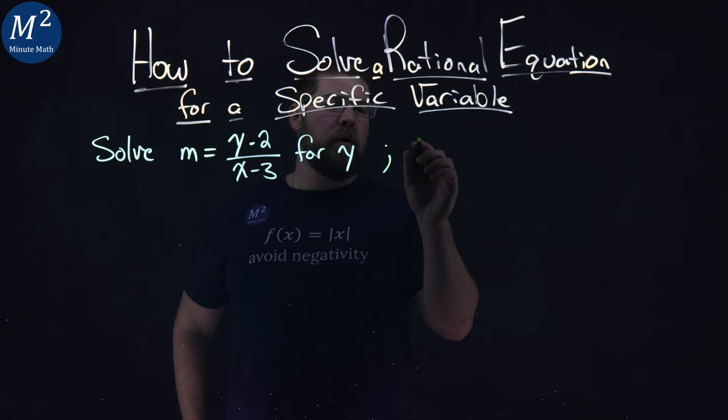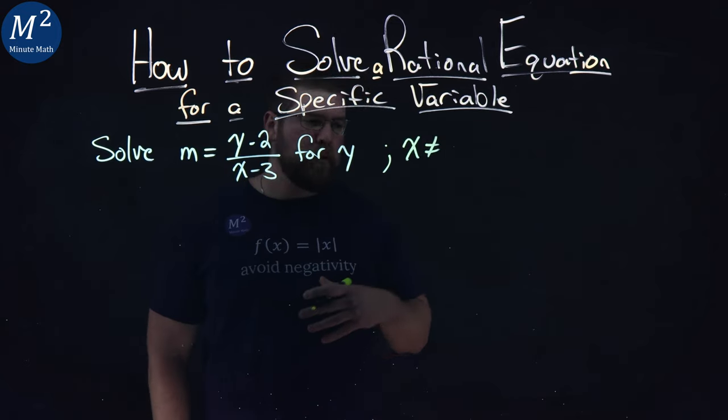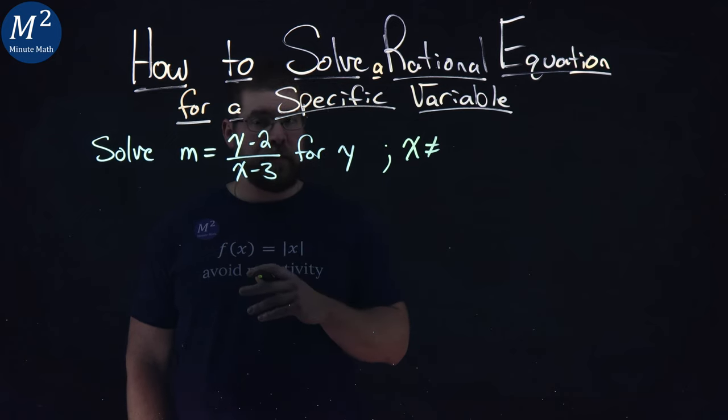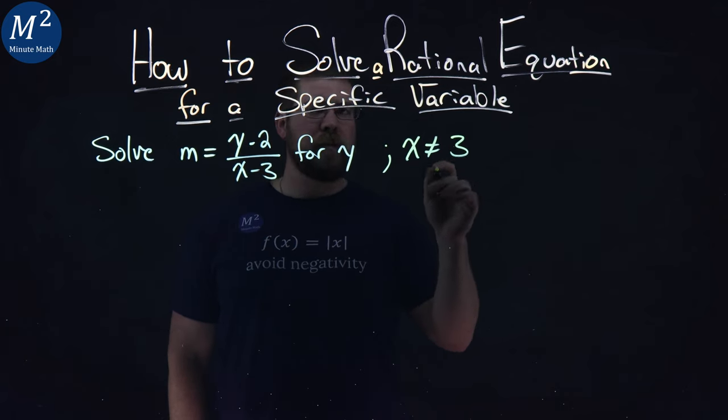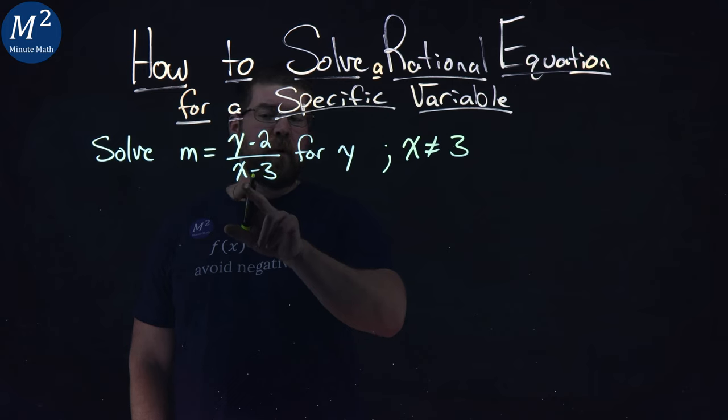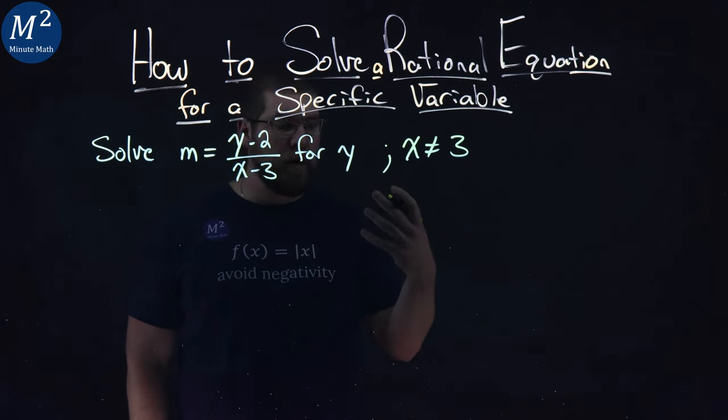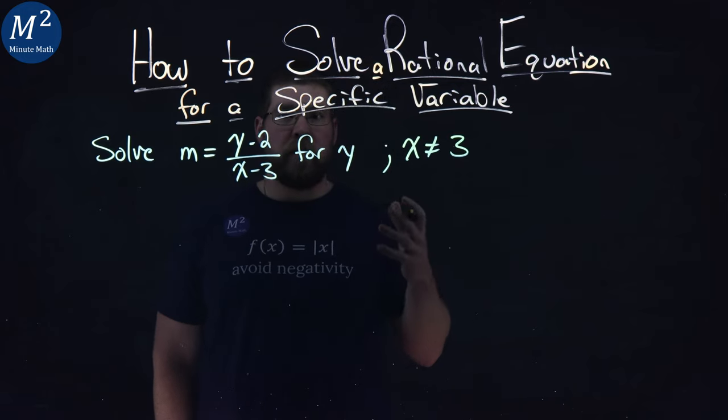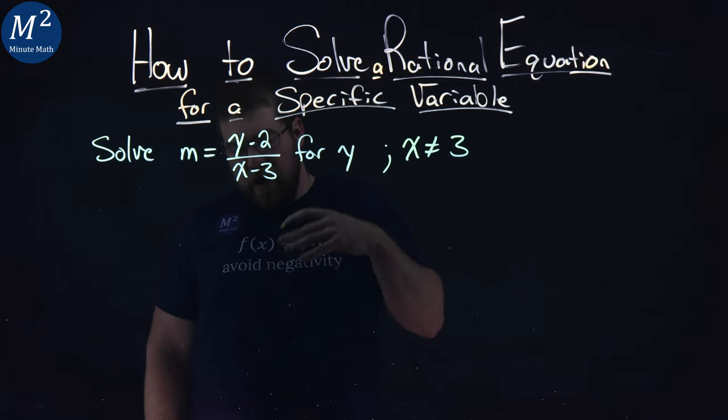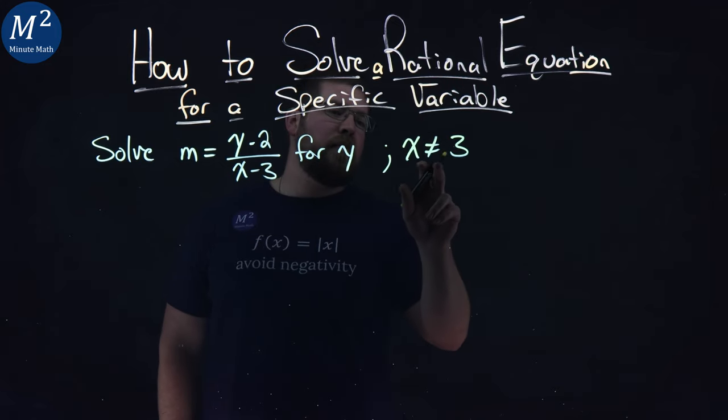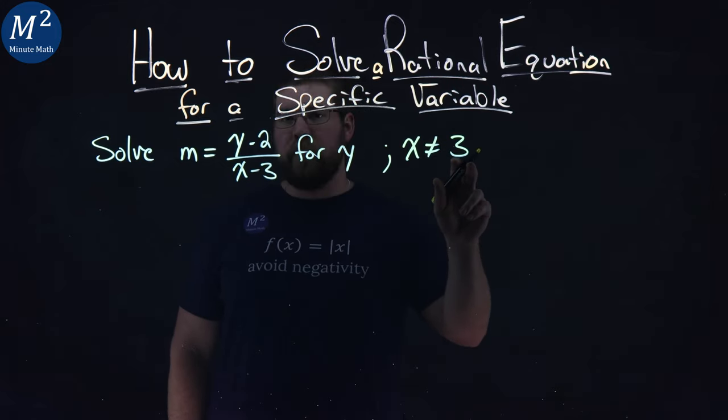Now, one thing I want to note here is x. There's rules we want to state here, and x cannot be a specific value, and that value is 3. Why is that? If we put 3 in for x, our denominator here becomes 0. 3 minus 3 is 0, and that's the only value for x that causes a denominator to be 0, and we can't divide by 0. It'd be undefined. So, that's why we have a little note here, x cannot equal 3.